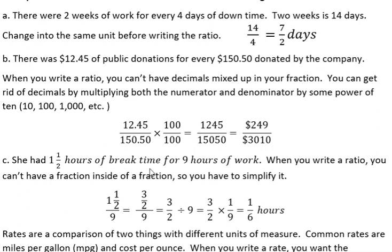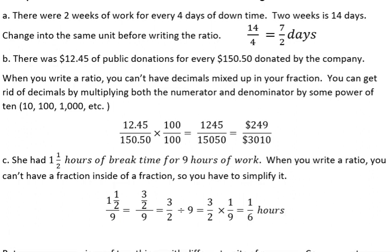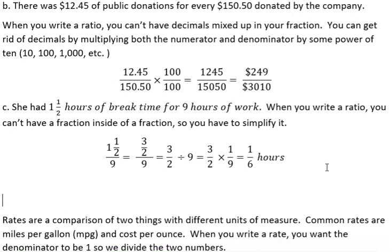She had one and a half hours of break time for nine hours of work. Well, these are already in the same unit, hours and hours, but we can't have a fraction inside of a fraction. So this is how this looks to start with, is we have one and a half over nine. She had one and a half hours of break time for every nine hours of work. So we want to change that into an improper fraction. That gives us three halves over nine.